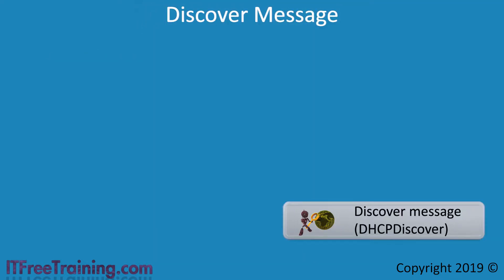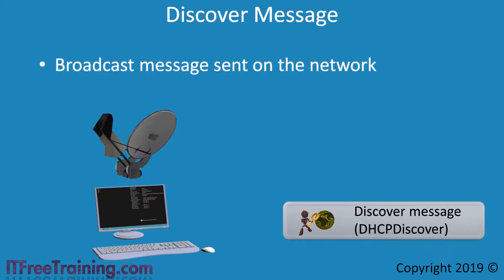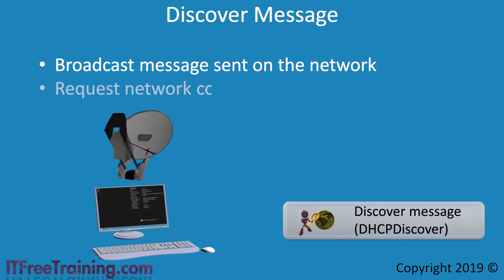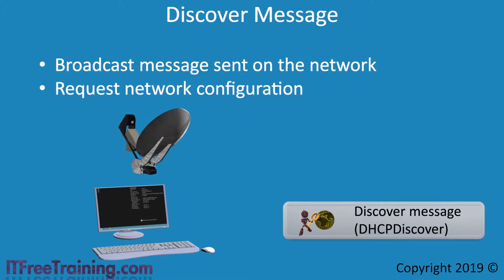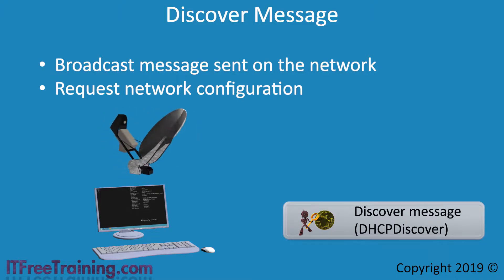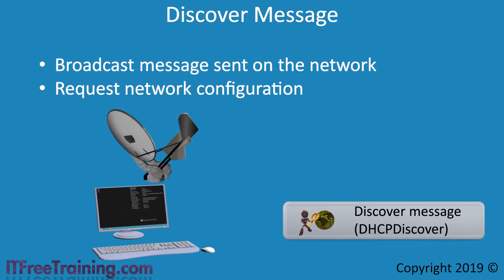The first message type is the Discover message. In IPv4, this is a broadcast that is sent on the network. A broadcast is required because the device does not have any network configuration. The Discover message is the device requesting network configuration — essentially going to all devices on the network saying: I have not had any network configuration and I am looking for a DHCP server.